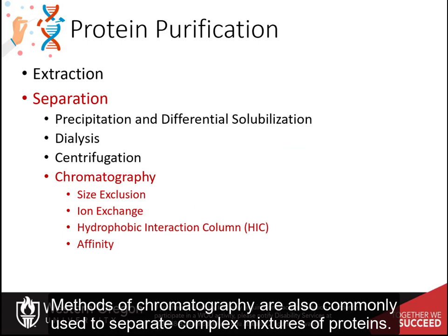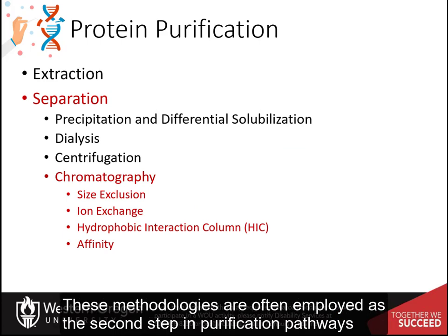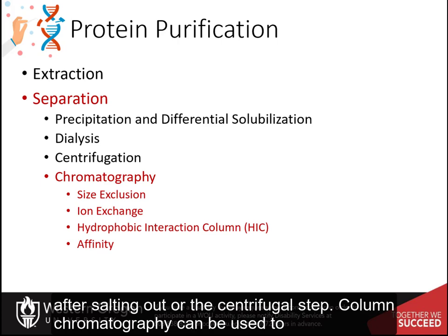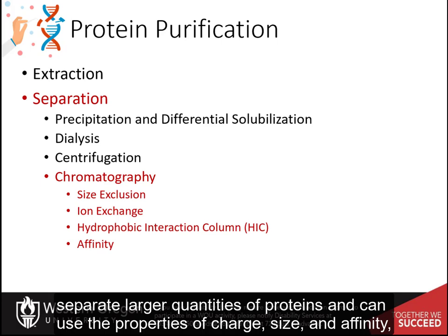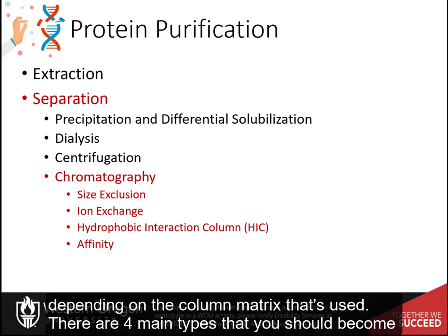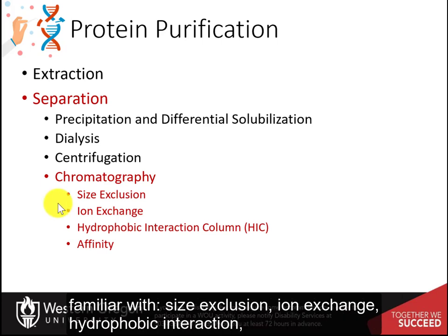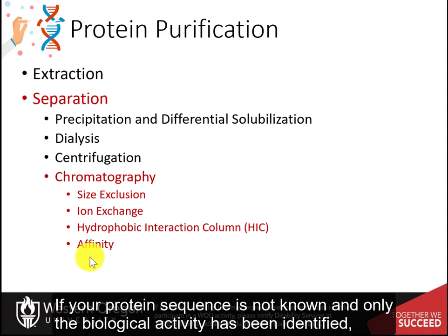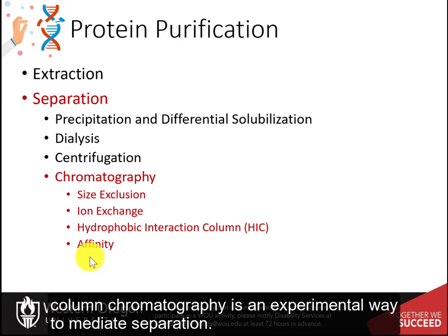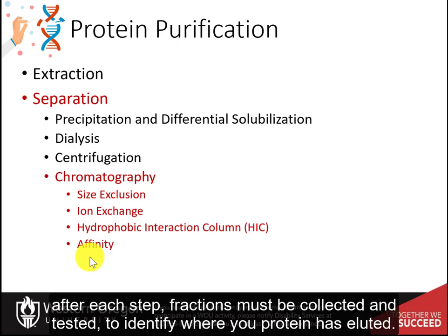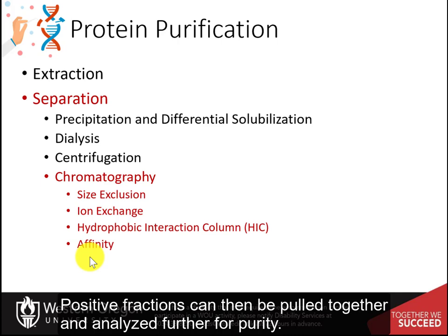Methods of chromatography are also commonly used to separate complex mixtures of proteins and are often employed as a second step in purification pathways after salting out or centrifugation. Column chromatography can separate larger quantities of proteins using the properties of charge, size, and affinity depending on the column matrix used. If your protein sequence is not known and only the biological activity has been identified, column chromatography is an experimental way to mediate separation. After each step, fractions must be collected and tested to identify where your protein has eluted. Positive fractions can then be pooled together and analyzed further for purity.